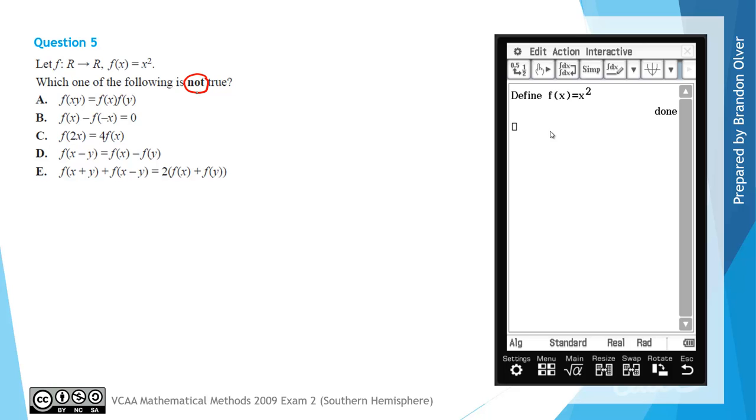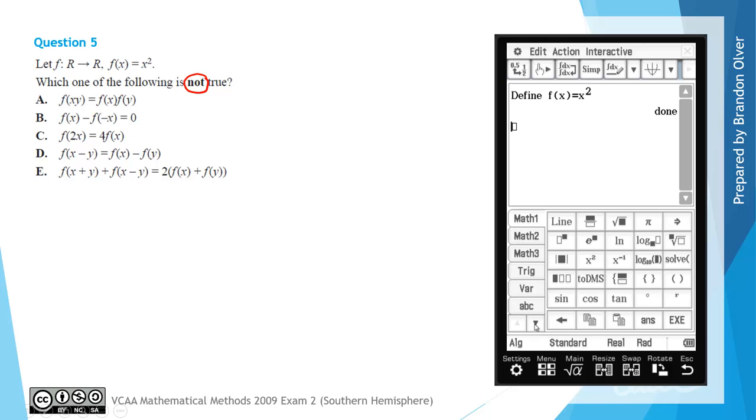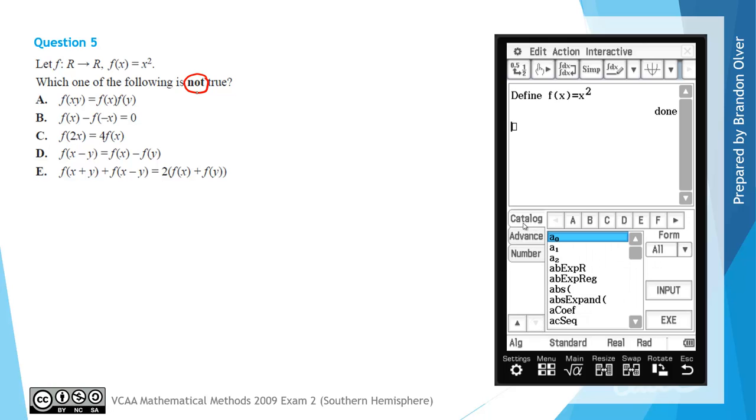Next we want to judge which of the following statements is not true. We're going to get a whole bunch of true ones, and one of them will be false or undefined on the calculator. The judge command can be found by going into the keyboard and then clicking on the down arrow, and then in the catalogue we want to go across to j for judge.